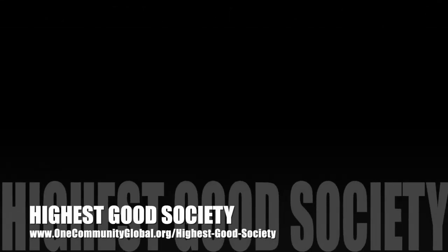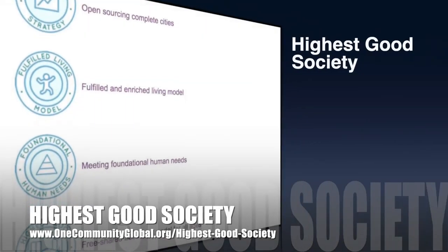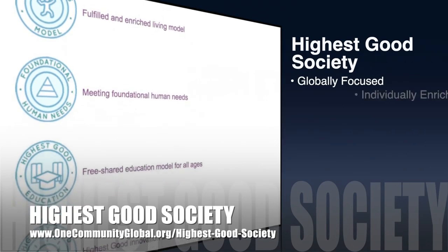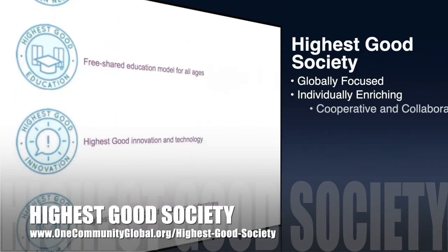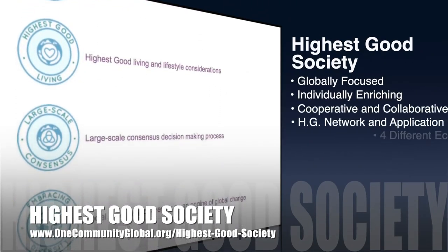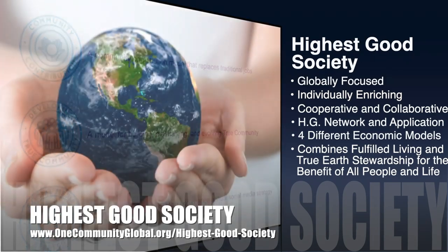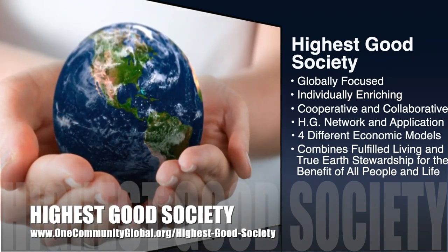The One Community approach to Highest Good Society is globally focused, individually enriching, cooperative and collaborative. It includes a Highest Good network and application, four different economic models, and combines fulfilled living and true earth stewardship for the benefit of all people and all life on this planet.